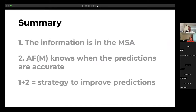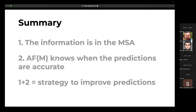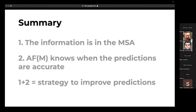To summarize: the information in the MSA and AlphaFold and AlphaFold Multimer knows when the predictions are accurate based on confidence. As Sergei also showed, it can be used to rank things. This strategy of optimizing the MSA and confidence is a good one to improve predictions, but also to search for different alignments or different conformations in the future.